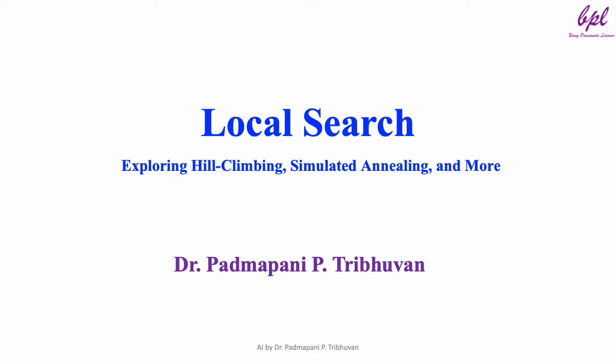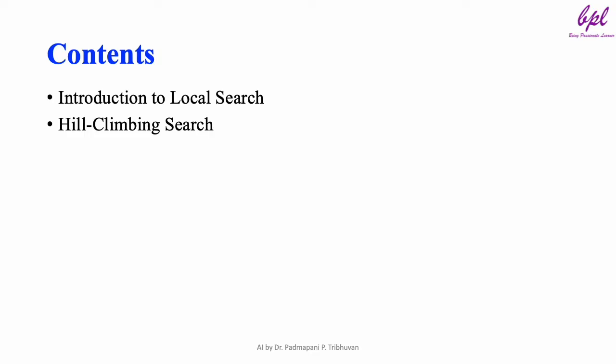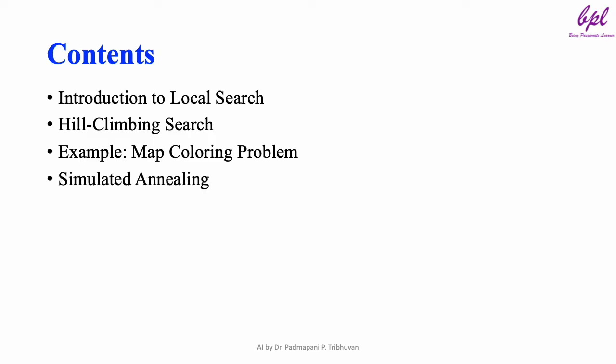Hello, welcome or welcome back to being passionate learner. In this video, we will explore the topic of local search for constraint satisfaction problems. This video is organized into 5 main sections. We will start by introducing local search, then move on to hill climbing search. After that, we will look at the map coloring problem as an example of local search, explore simulated annealing with map coloring, and discuss when it's best to use local search. After that, we will conclude our video.